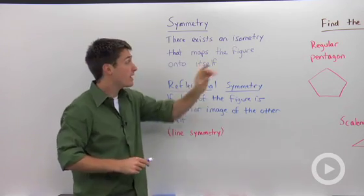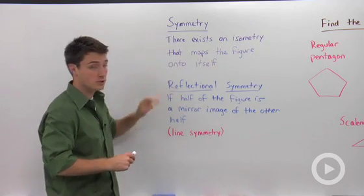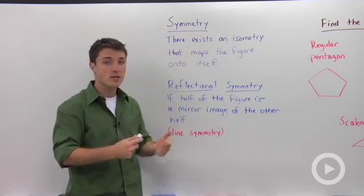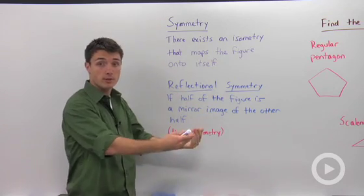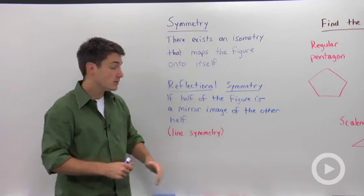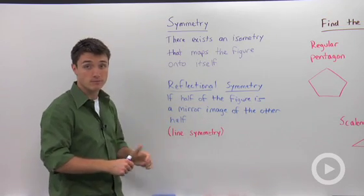If that isometry is a reflection, then a figure has reflectional symmetry. Another way of thinking about reflectional symmetry is that half of the figure is a mirror image of the other half. We also describe reflectional symmetry using the term line symmetry, so those two are interchangeable.